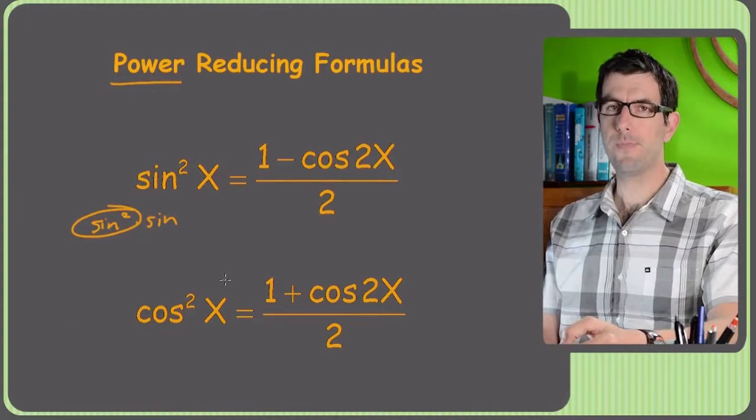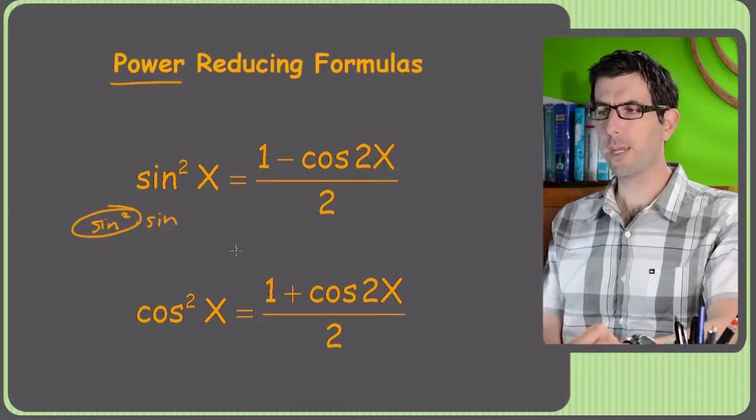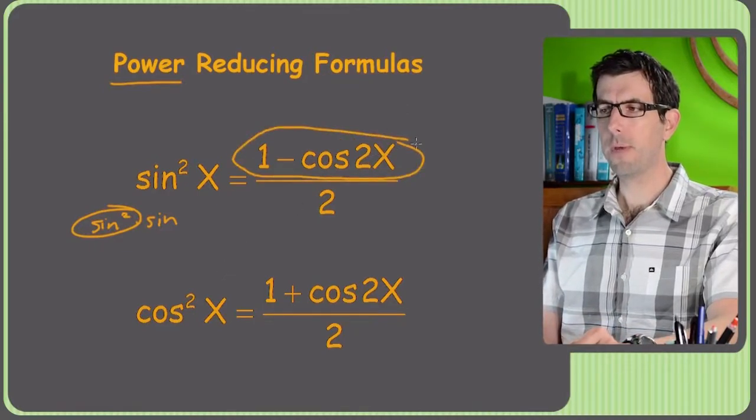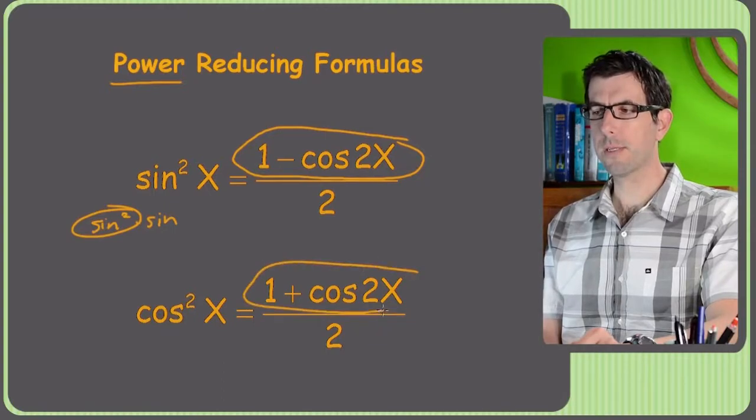There's one for tangent as well, tangent squared, but that's just going to be sine squared over cosine squared, so I don't bother including it here. Tan squared would just be 1 minus cosine 2x over 1 plus cosine 2x.